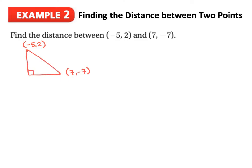Now we're going to look at it mathematically. We can look at the x-coordinates of our points: negative 5 and 7. For those who struggle with negative numbers, I like to think of this on a number line. If I have negative 5 and positive 7, with 0 somewhere in between: the distance between negative 5 and 0 is 5, and the distance between 0 and 7 is 7, so the total distance is 12. This horizontal leg of our right-angle triangle is 12 units.